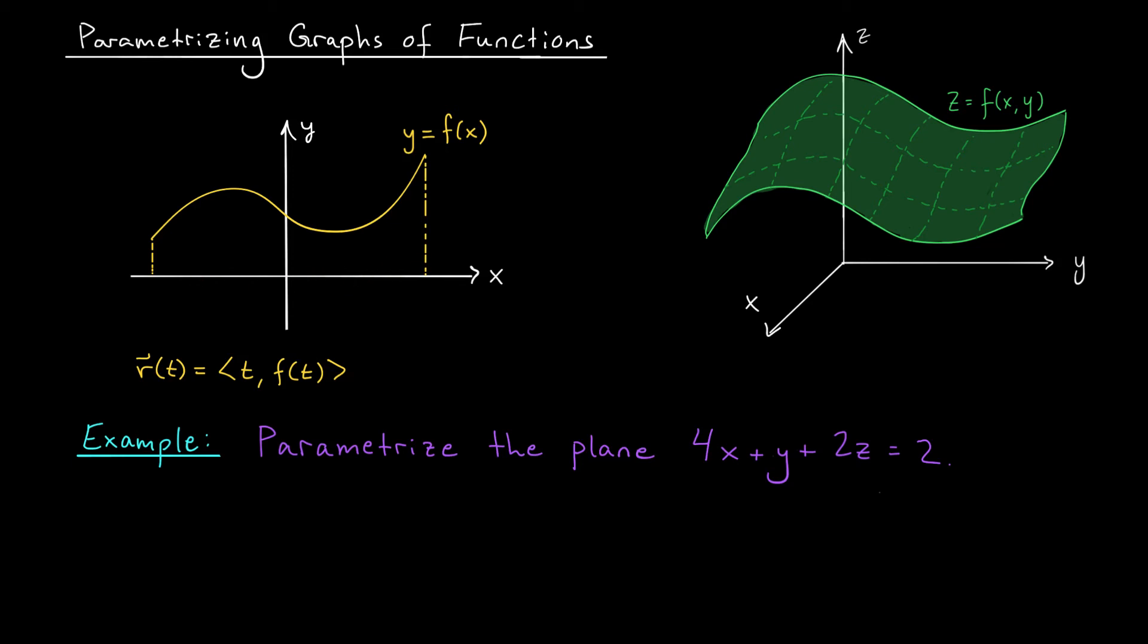The situation for multivariable functions is exactly the same. If I give you a function, z equals f of x, y, then your x and y are going to be the parameters. They can take on whatever values they like in the domain, but z must be equal to this expression here. So we could use the parametric equation, r of, say, x, y. There's no need to rename them here. r of x, y equals x, y, f of x, y.